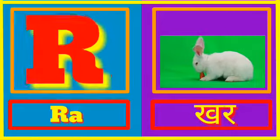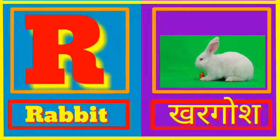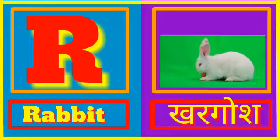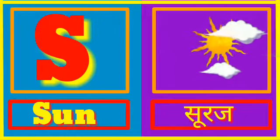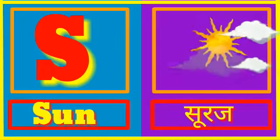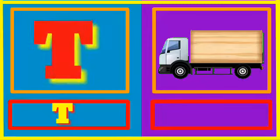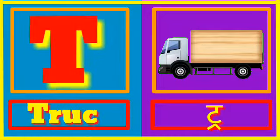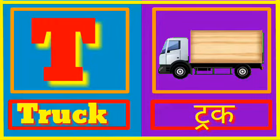R for Rabbit. Rabbit means Khargosh. S for Sun. Sun means Suraj. T for Truck. Truck means Truck.